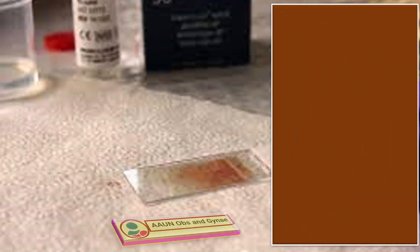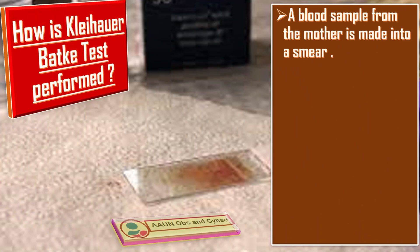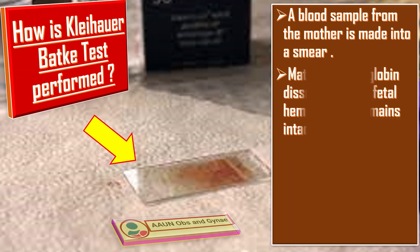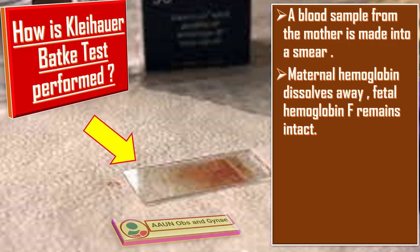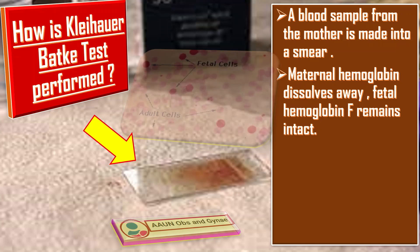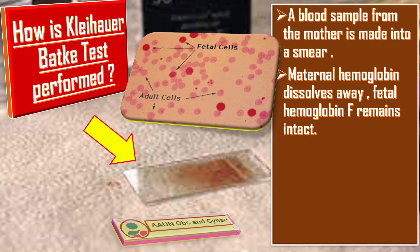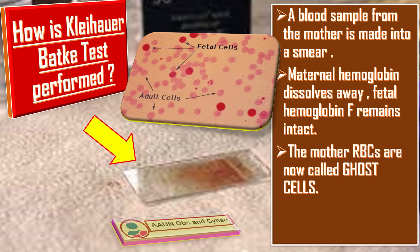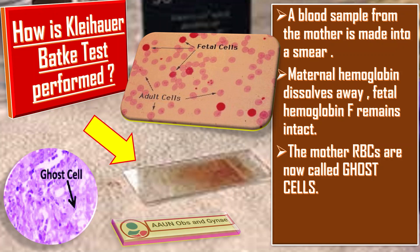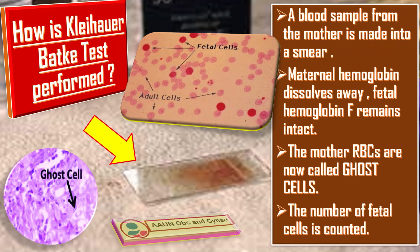To perform the Kleihauer-Betke test, a blood sample from the mother is made into a smear on a glass slide, then the slide is flooded with acid. Maternal hemoglobin, presumably HbA as in most adults, dissolves away while fetal hemoglobin F remains intact. The slide is then washed, stained, and read. The mother's RBCs from which hemoglobin has been washed out are now called ghost cells, but the fetal cells will remain the same. The number of fetal cells is then counted to estimate the total volume of fetal blood loss.